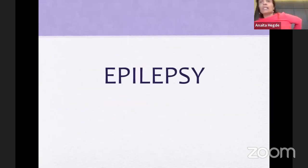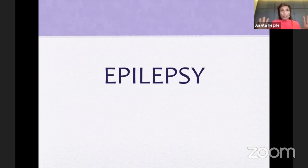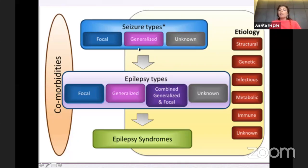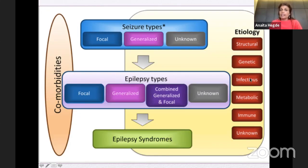Now this child has had more than two seizures and has been diagnosed with epilepsy. Today the classification of epilepsy uses focal seizures and generalized seizures. Once you've had more than two of unknown etiology, you go into focal, generalized, or combined focal and generalized. Once you look at all the etiology — structural, genetic, infectious, metabolic, immune, or unknown — we can club children into epileptic syndromes.